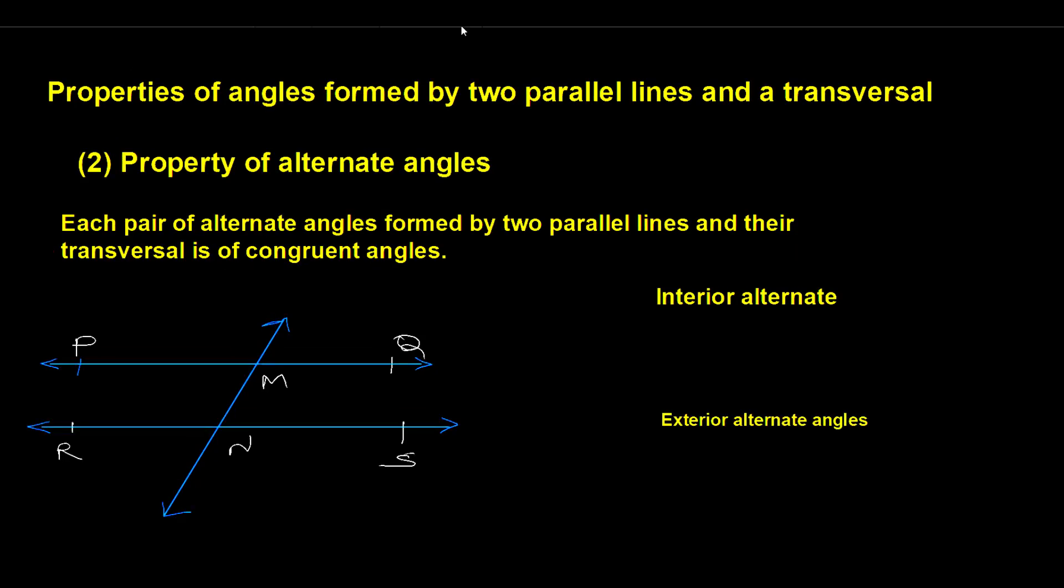Property of alternate angles: Each pair of alternate angles formed by two parallel lines and their transversal is congruent. Interior alternate angle pairs are congruent to each other.